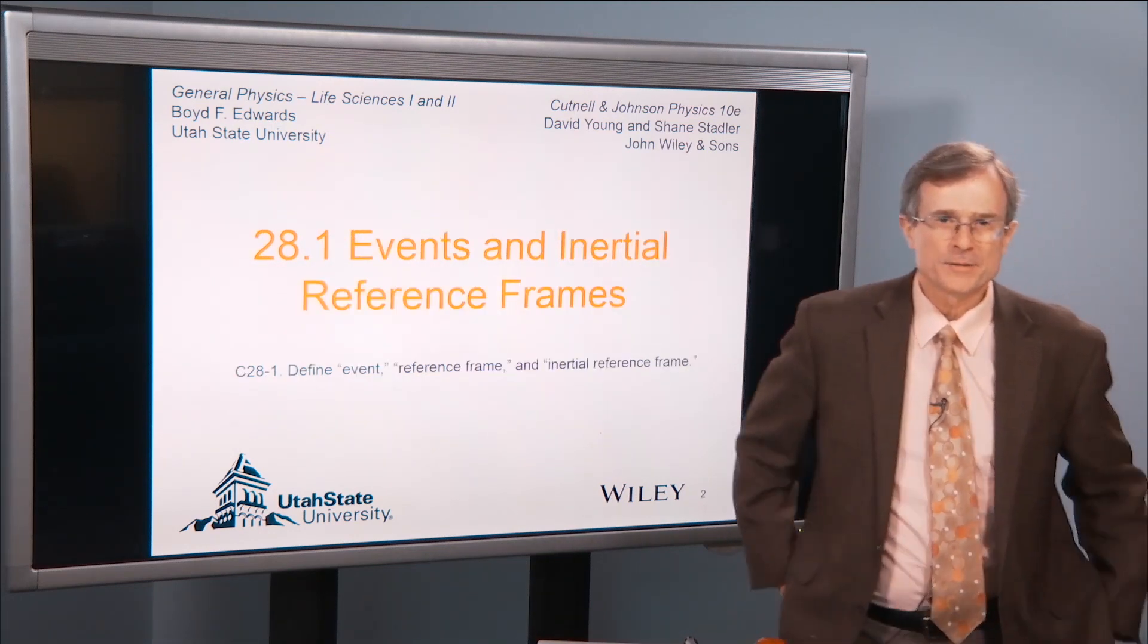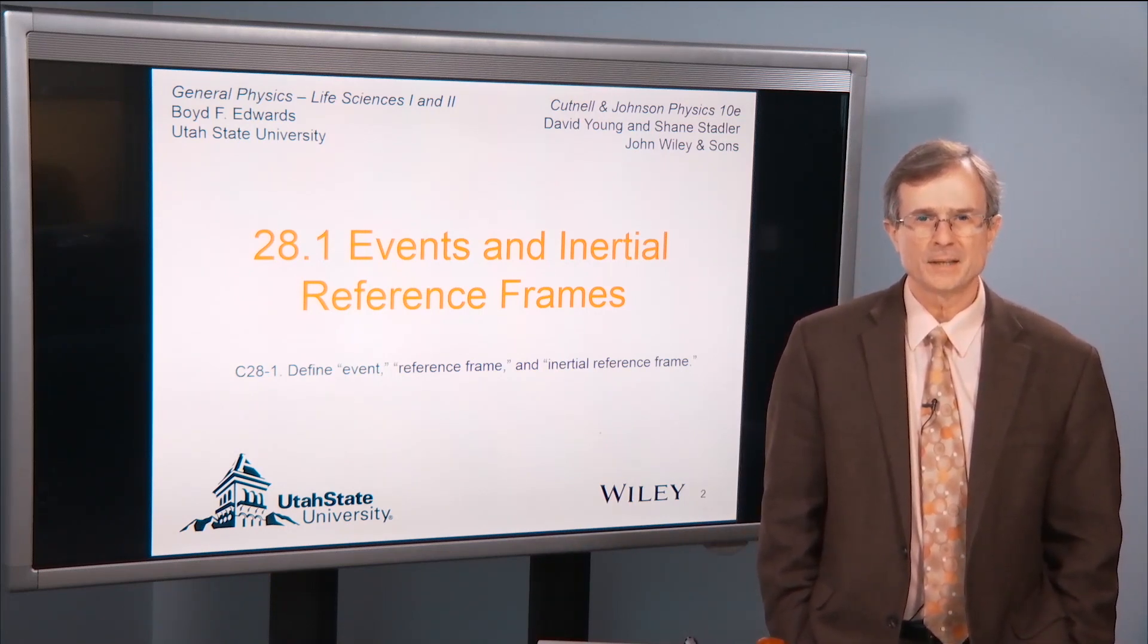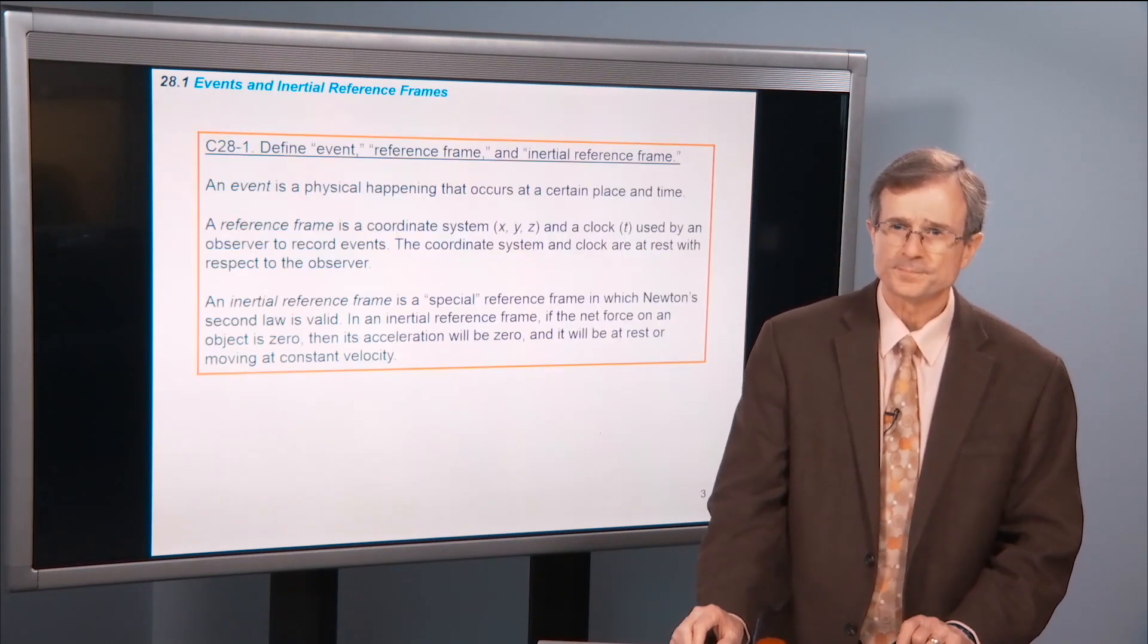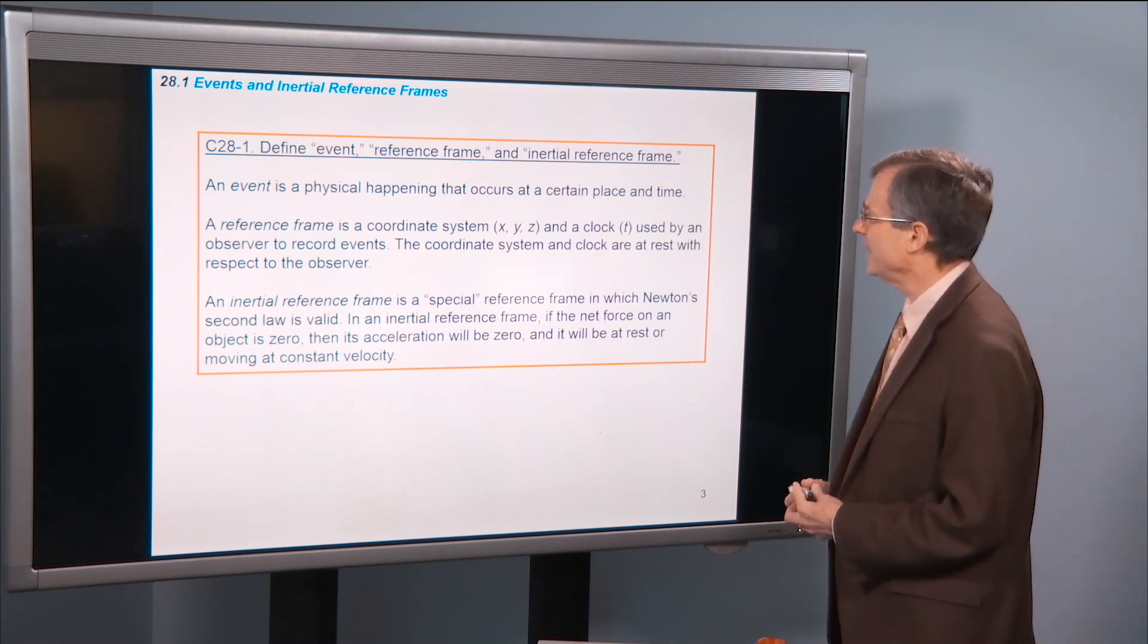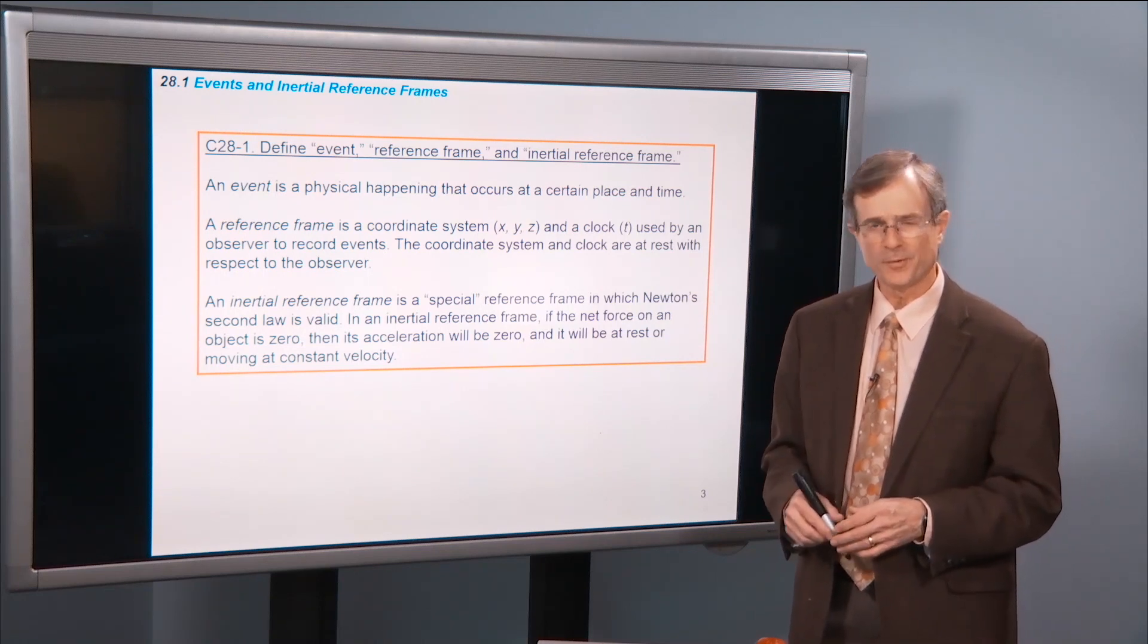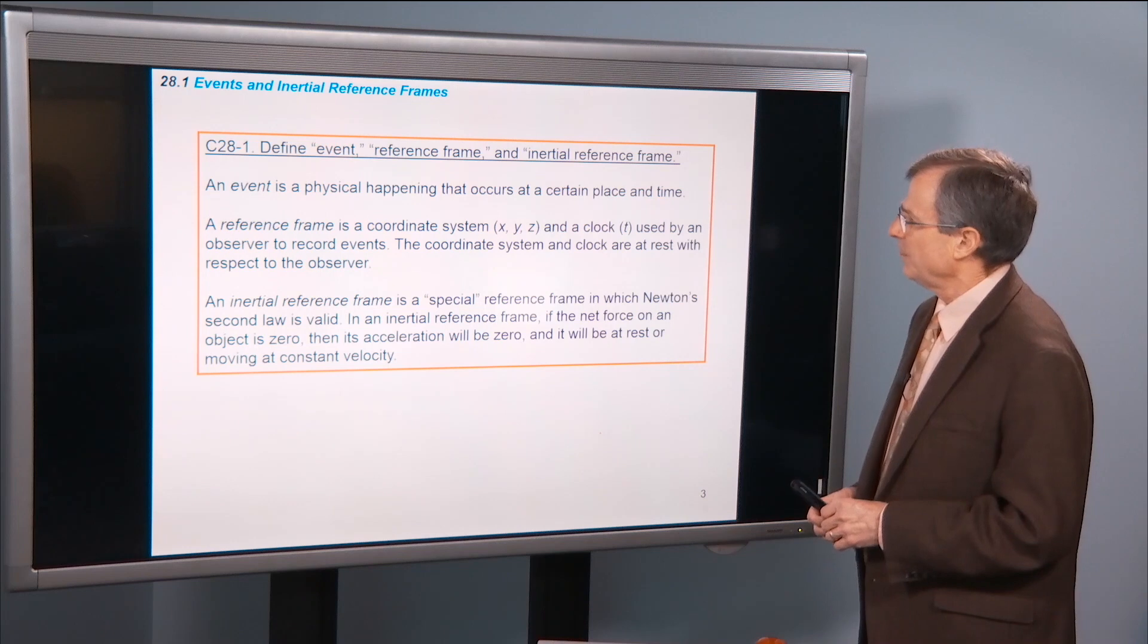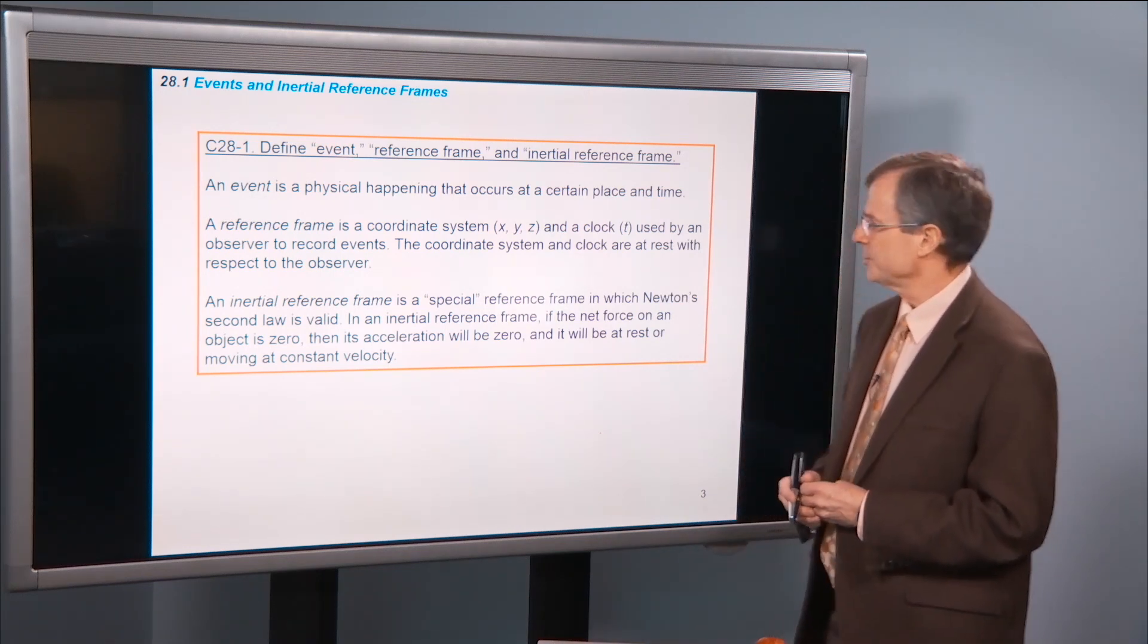To understand the theory of special relativity we have to first understand about events and inertial reference frames. So we're going to define an event, a reference frame, and an inertial reference frame. We talked about this when we talk about Newton's laws in chapters 4, 5, etc. last semester but we're going to be a little bit more precise about it in this chapter.